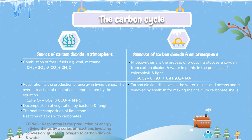Let's look into the removal of carbon dioxide from the atmosphere. The first example is the process of photosynthesis. Photosynthesis is a process of producing glucose and oxygen from carbon dioxide and water in plants, in the presence of chlorophyll and light. The chemical equation is: 6CO2 + 6H2O → C6H12O6 + 6O2.